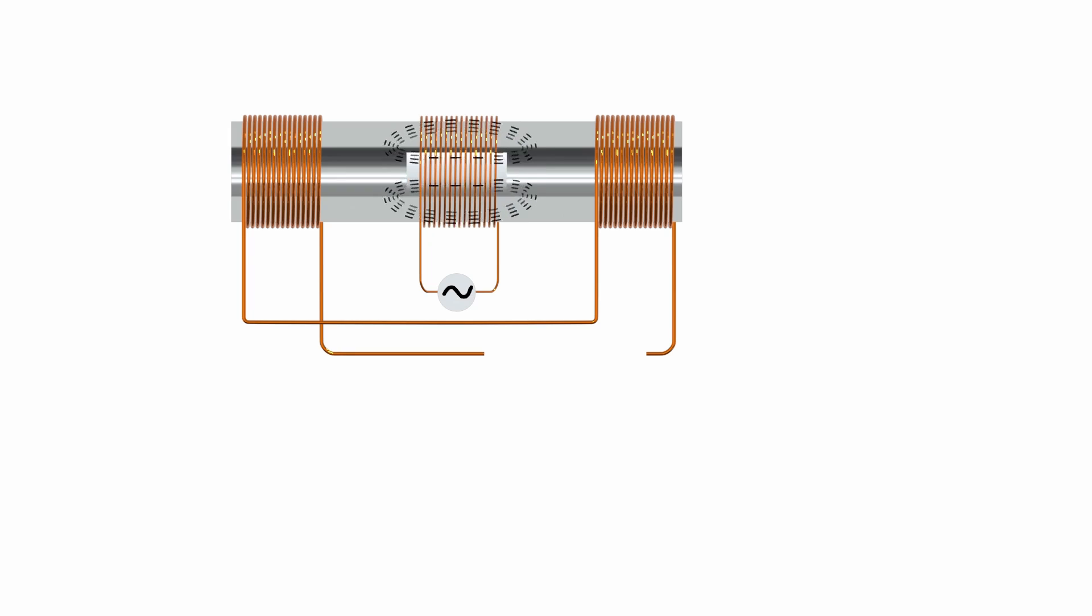The primary coil is wound around a hollow bobbin of non-magnetic, insulating material rod and is connected to an AC power source.